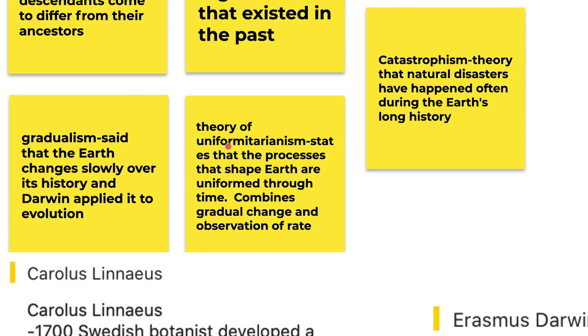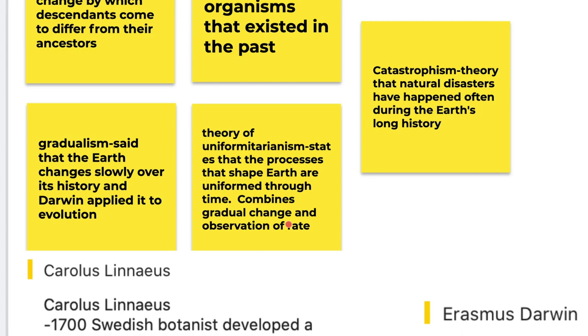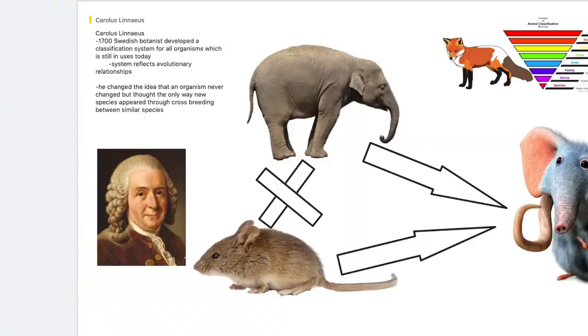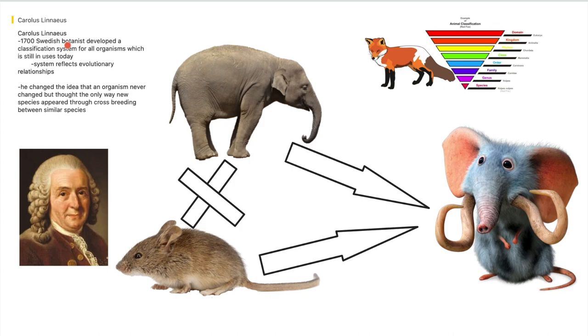Theory of Uniformitarianism states that the processes that shaped the Earth are uniform through time, combining gradual change in the observation of rate theories. So we're going to go to our next slide. We're going to learn about Cornelius Linnaeus.